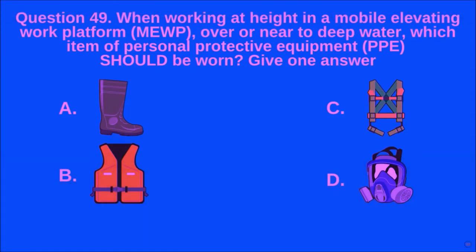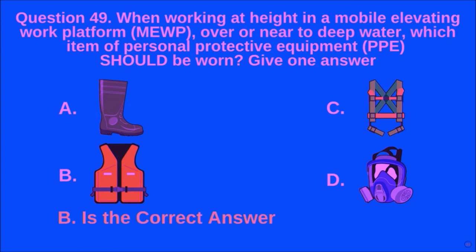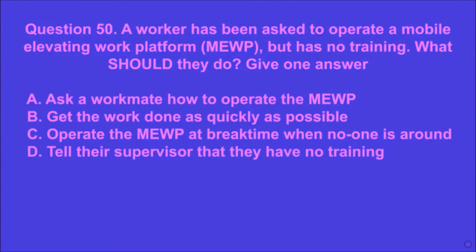Question 49: When working at height in a mobile elevating work platform (MEWP) over or near to deep water, which item of personal protective equipment (PPE) should be worn? Give one answer. A, B, C, D. B is the correct answer.